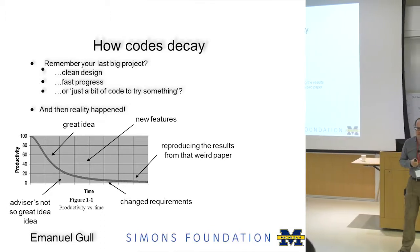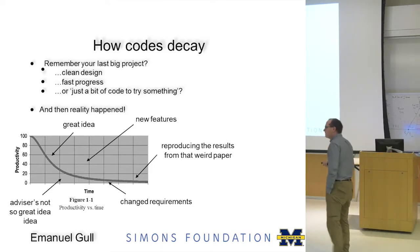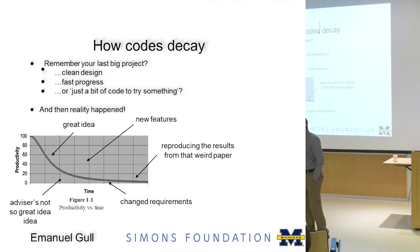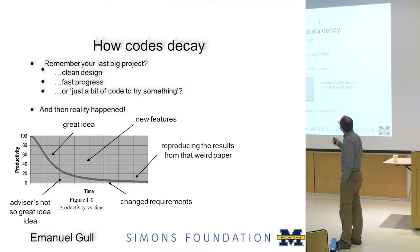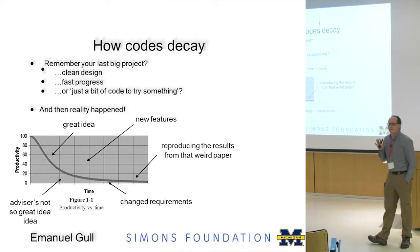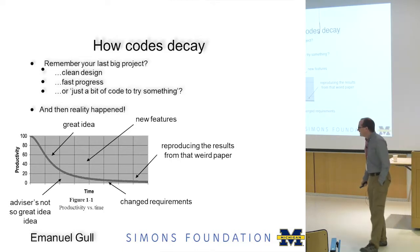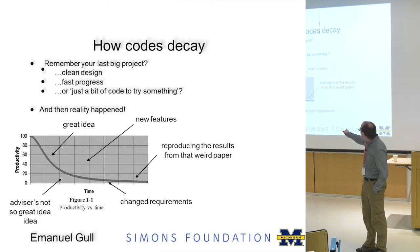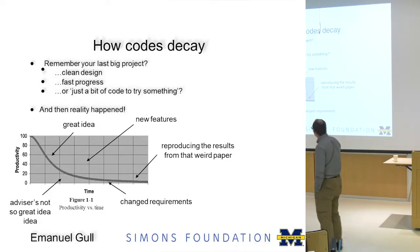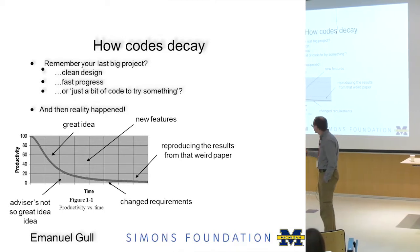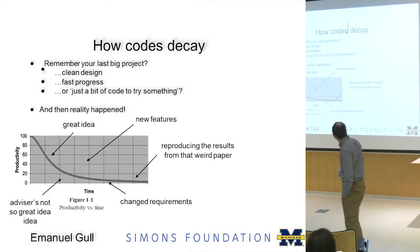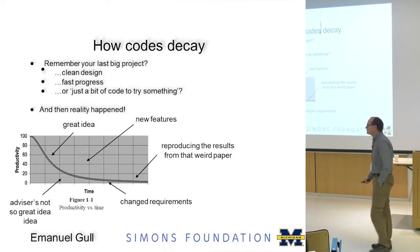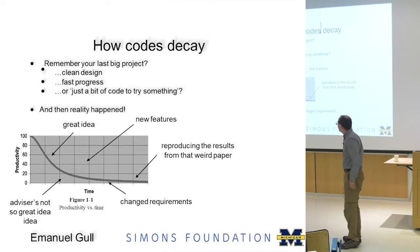Remember your last big project. You had a goal, you promised yourself you were not going to make that mess again. You started from a clean slate, you were going to do everything nice and proper — clean design, fast progress — and life was good. Then reality set in. If you look at productivity as a function of time: you had a great idea that turned out to be not so great, your advisor came with requests, you added bells and whistles that weren't useful, and your productivity slowed down because there's so much to track.